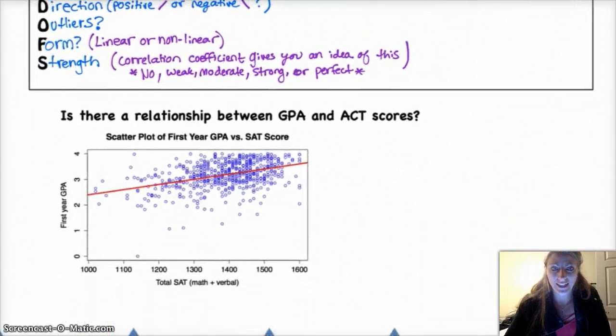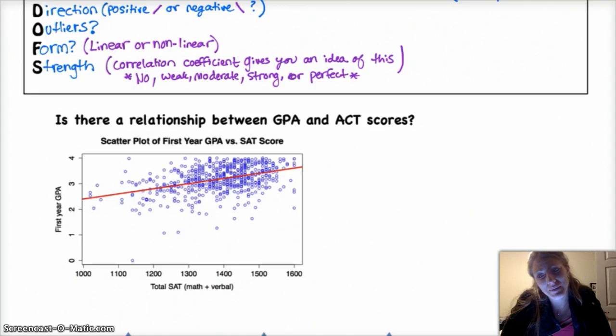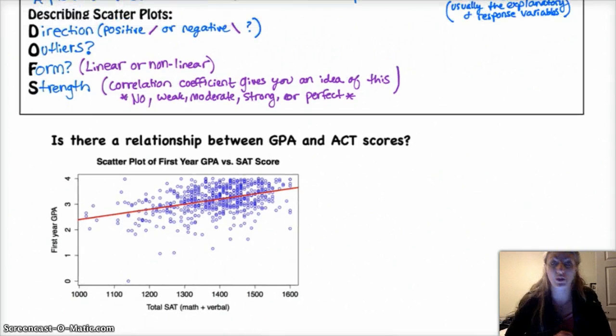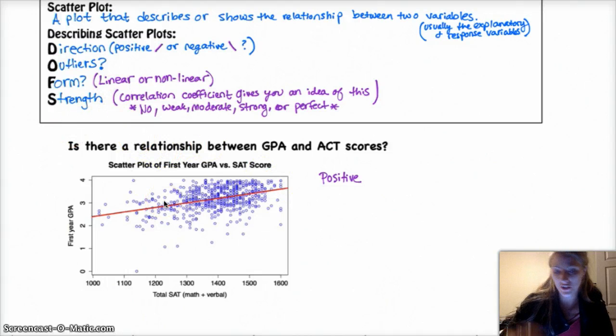Below, I give you a scatterplot of GPA versus SAT score. You notice that the SAT is on the x-axis, GPA is on the y. Probably better do it the other way, but you don't really have a very clear explanatory and response variable in this case. If we were to describe this using DOFS, there seems to be a positive, because it's going up as SAT scores increase, so does GPA. Positive, that's your direction. Form is approximately linear. You see as one variable goes up, so does the other. And it's a moderately strong relationship.